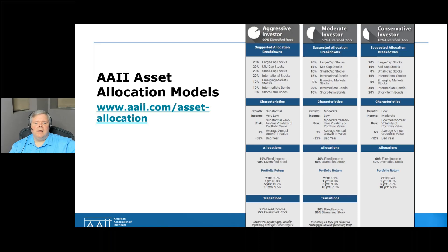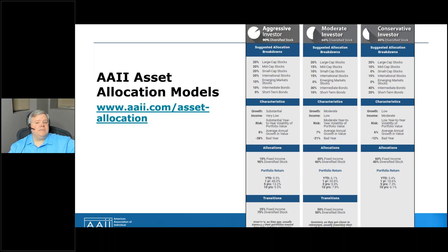The AAII asset allocation models offer guideposts to follow depending on the type of investor you are — whether you're aggressive, moderate, or conservative. The key is to be honest with yourself when assessing your investment time horizon, style, and risk tolerance. You have to take a really hard look in the mirror to get a very good idea of the type of investor you are. You might think you're an aggressive investor, but if you can't stomach a high degree of market volatility — drawdowns as much as 50% — or if you're very close to needing your investment assets, such as nearing retirement, you may wish to take a more conservative track to preserve your principal or at least sleep well at night. Likewise, if you have a longer time horizon, being overly conservative could keep you from reaching your financial goals.